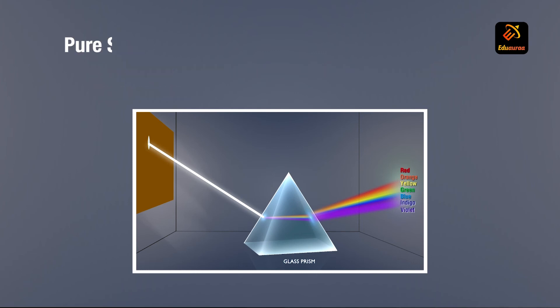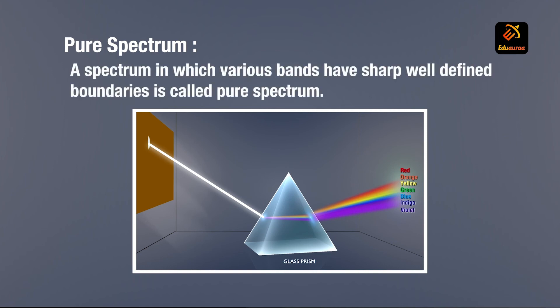Next is pure spectrum. Now you can easily guess what a pure spectrum is all about. Any spectrum in which various bands have sharp, well-defined boundaries is called pure spectrum.